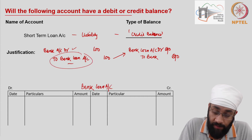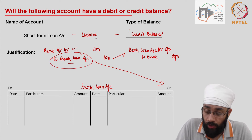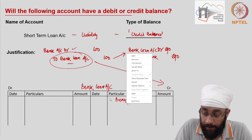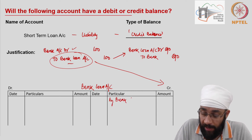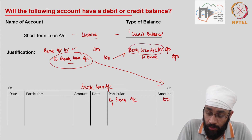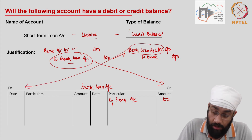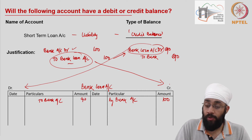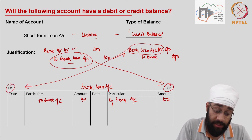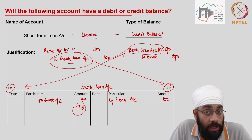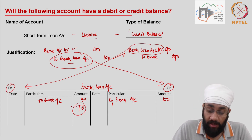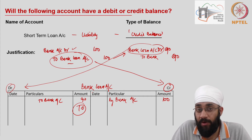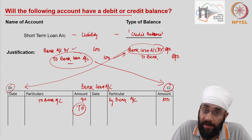When we post to the bank loan account: the first entry where bank loan is credited goes on the credit side — by bank account, 100. The repayment goes on the debit side — to bank account, 90. The credit side total is higher than the debit side, so 10 is the remaining balance. Even if you pay the full loan, you will never have a debit balance in the loan account.